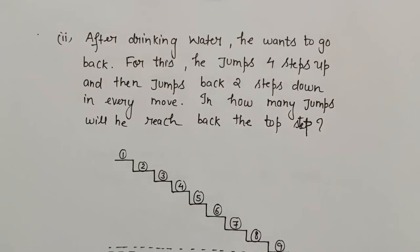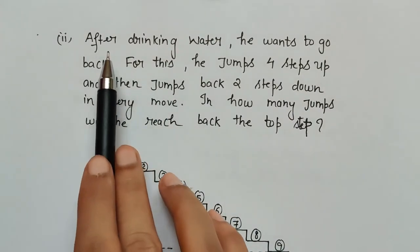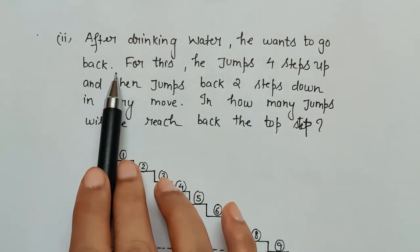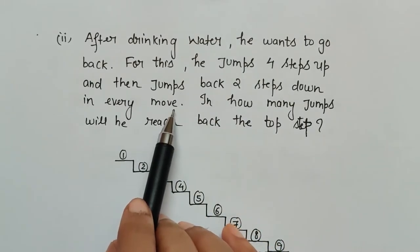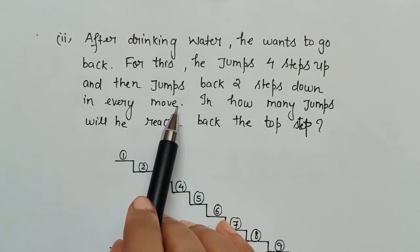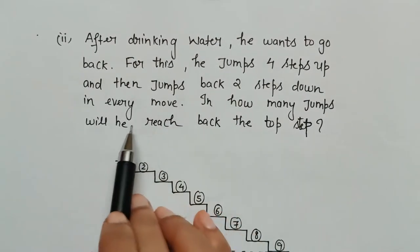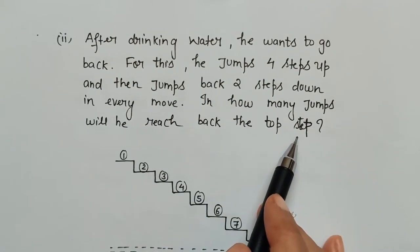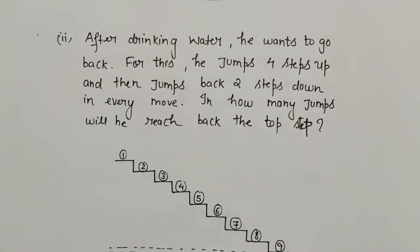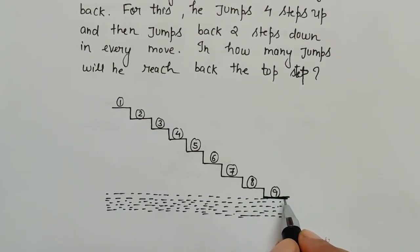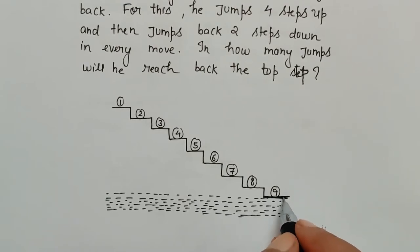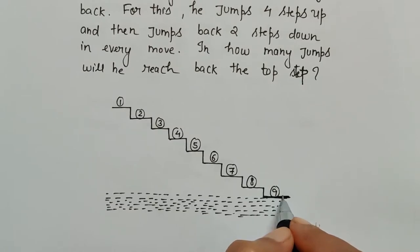The second part of the question says that after drinking water the monkey wants to go back. For this, he jumps four steps up and then jumps back two steps down in every move. We have to count the jumps to find in how many jumps he will reach back the top step. At this time the monkey is at the ninth step, having drunk the water, and now wants to go back.